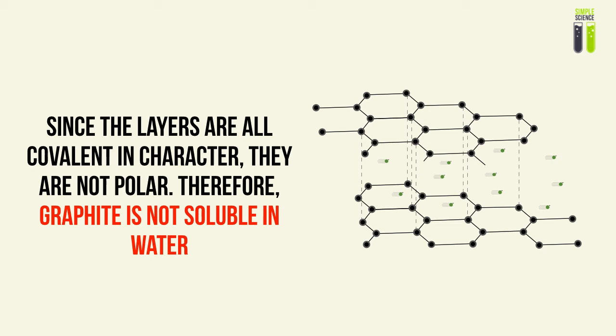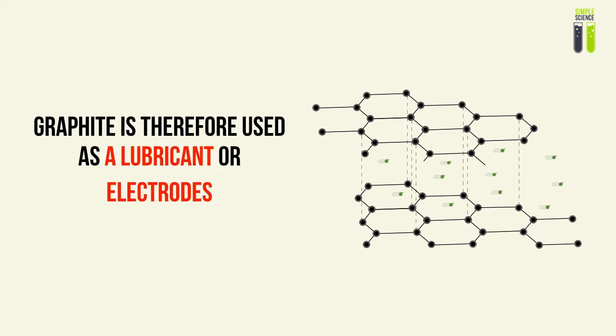Graphite is used as a lubricant due to its slippery property, and as a cheap electrode because it can conduct electricity. In IGCSE questions on electrolysis, you will typically be dealing with graphite electrodes because they are cheap and conduct electricity very well.